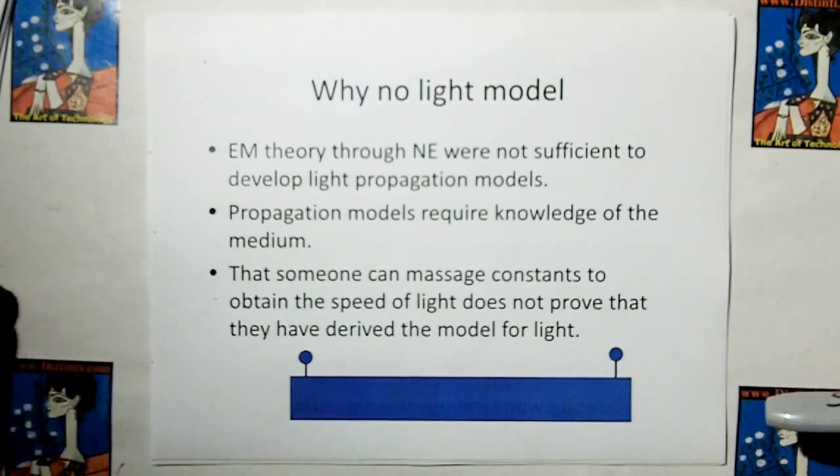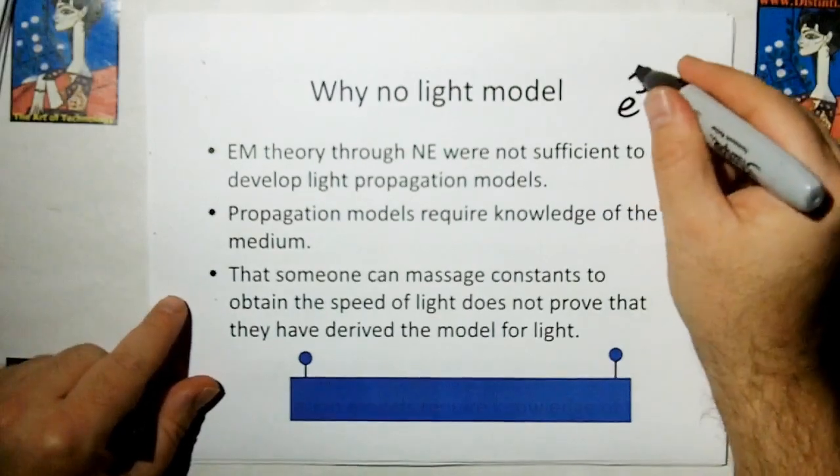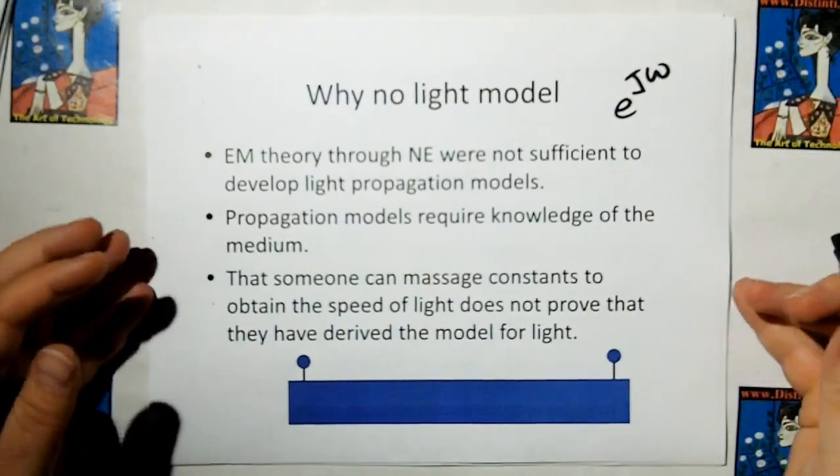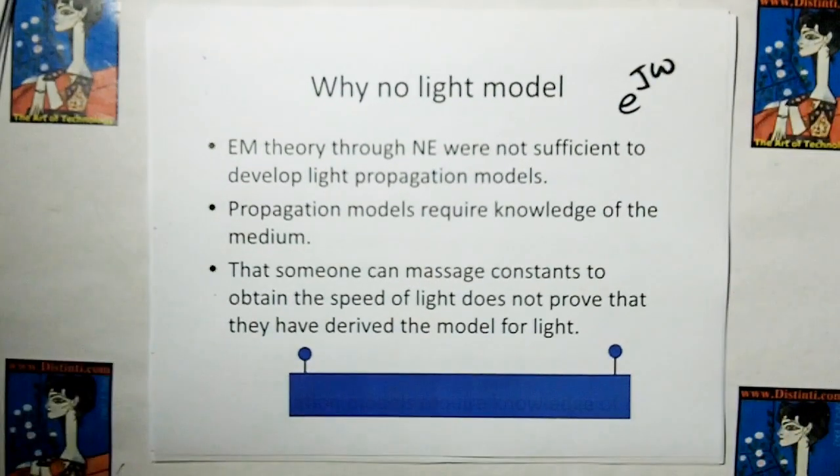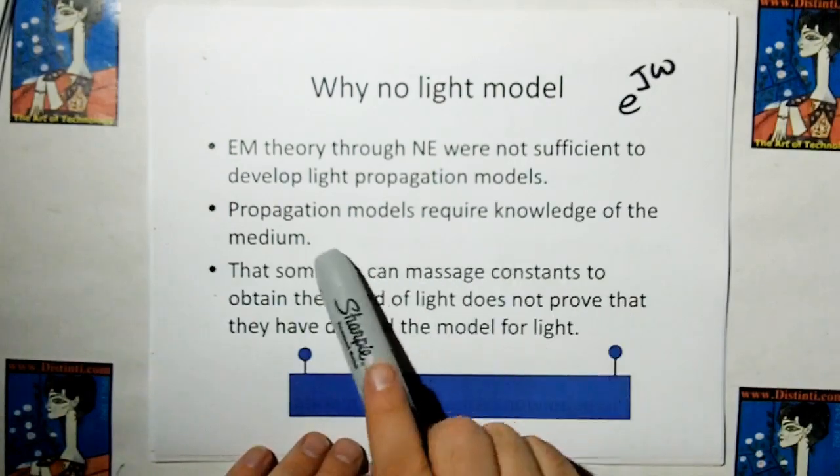You go to videos 2 and 3 to find out why that was bogusly wrong. And why engineers are using a wave model, e to the j omega, which is a wave model for a medium, which works better than Maxwell's equation, which is not a wave model for a medium.